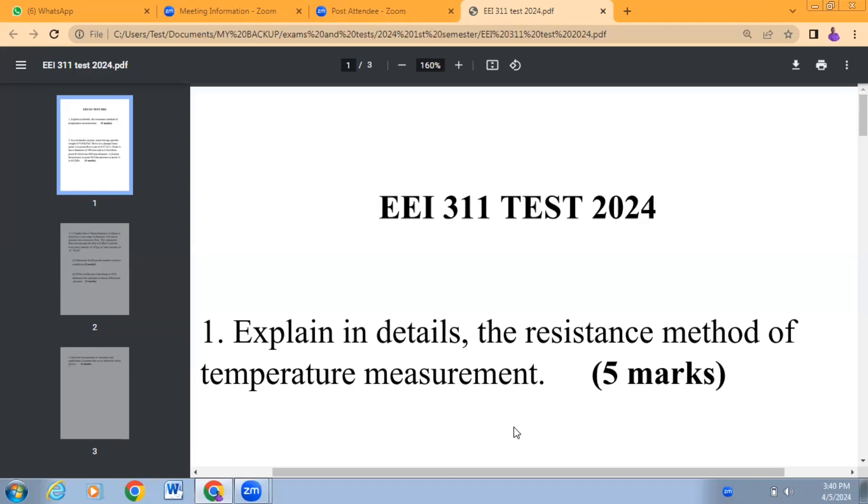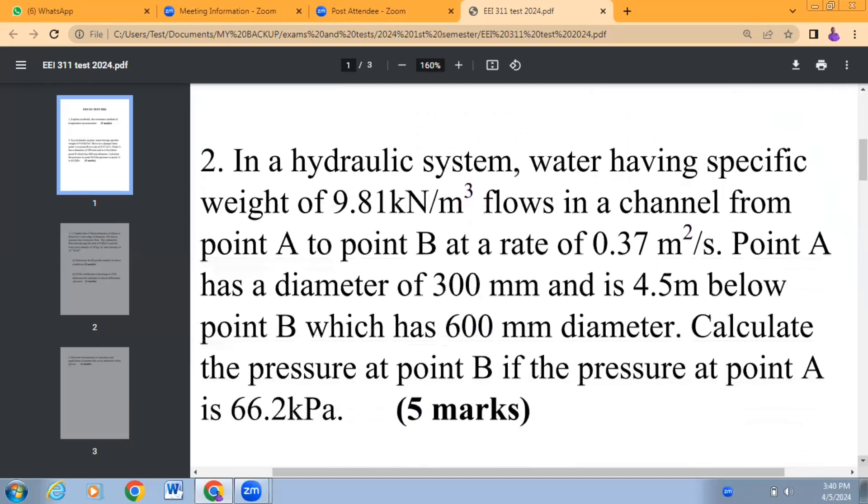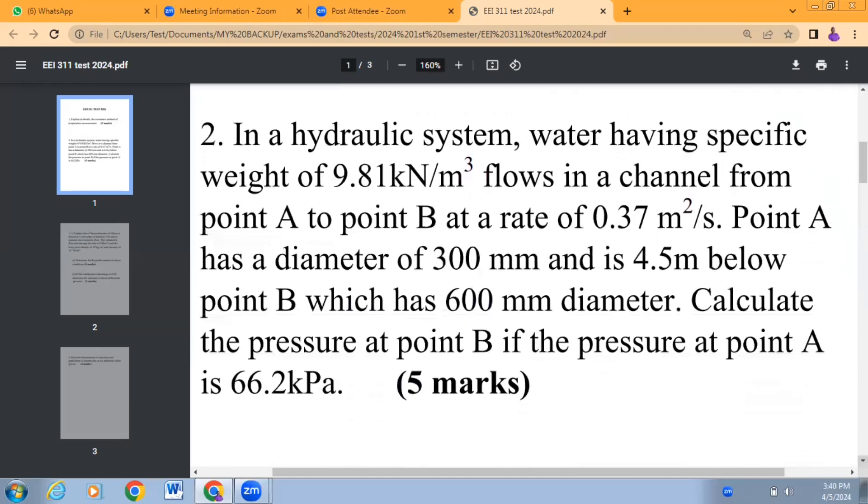We go on now to the second question, which is a calculation problem based on pressure measurements, pressure flow, velocity of flow, and the hydraulic head of fluid in the channel. The question says: in a hydraulic system, water having specific weight of 9.81 kilonewtons per meter cube flows in a channel from point A to point B.